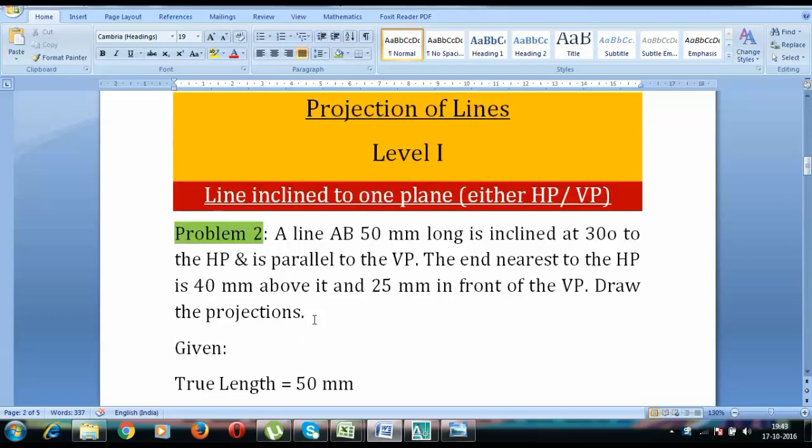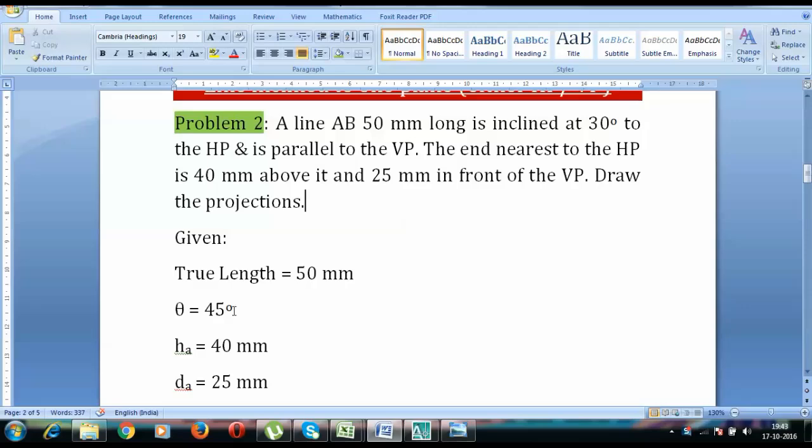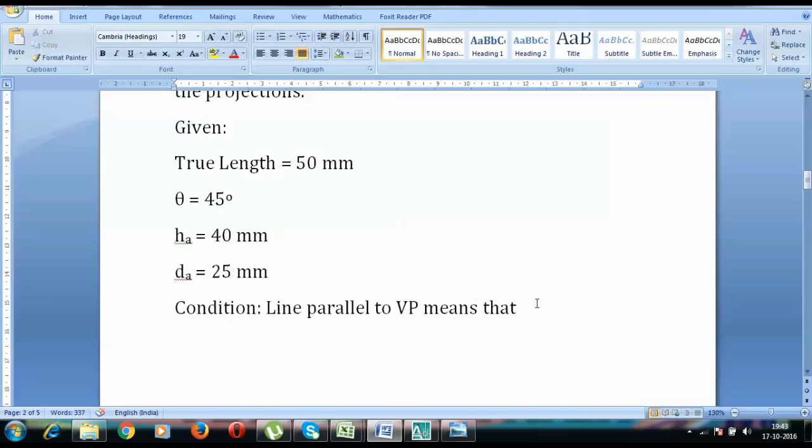So the true length has been given to us as 50mm and this line is inclined to the horizontal plane. Any sort of inclination with the horizontal plane is represented by theta. So theta has been given to us as 45 degrees. Now this particular line is parallel to the VP.